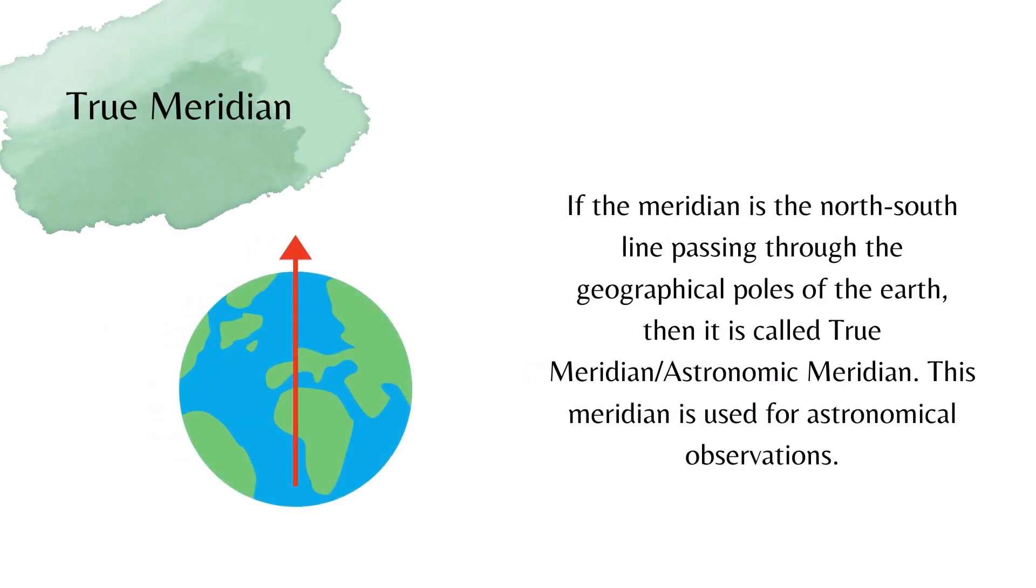True meridian is the north-south line passing through the geographical poles of the earth. As it is associated with the geographical poles of the earth, it is also called astronomic meridian.